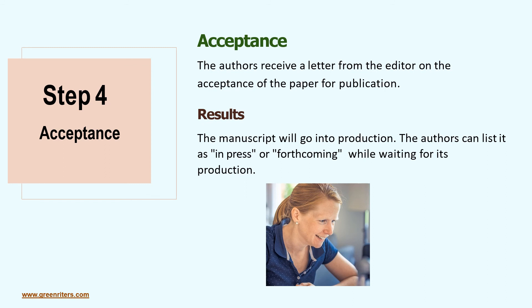Step 4: Acceptance. When the paper is accepted, the authors get an acceptance letter. The authors may be requested to complete certain documents, such as requirements for publication. The manuscript will be copy-edited and then put into production. While the authors are waiting for it to be published in the journal, they can list it as in press or forthcoming.